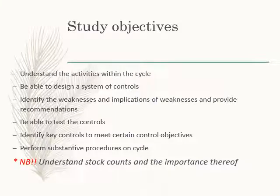These are the study objectives for the production and inventory cycle. You will need to be able to understand the activities within the cycle and be able to design a system of controls for the cycle. If you are given a system description, you have to be able to identify the weaknesses within the system, as well as state the implications of these weaknesses and provide recommendations.